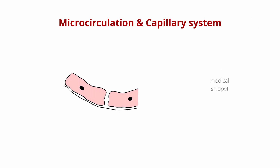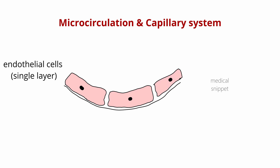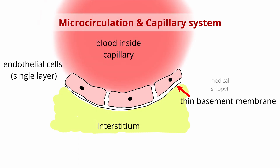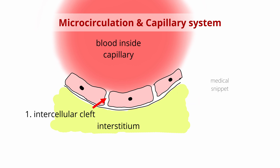Capillaries are made of a single layer of endothelial cells and are surrounded by a thin basement membrane. There are two very small pathways in the endothelium for transport of nutrients to the interstitial spaces. One of the pathways is the intercellular cleft. This cleft allows fluid, small solutes, and water-soluble ions to freely pass from the capillaries into the interstitial spaces. But albumin molecules cannot freely pass, as the cleft space is slightly narrow for the protein molecules to escape.